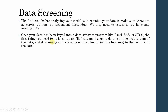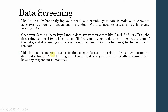The first thing you need to do is set up an ID column. I normally do this in the first column of the data — it is simply an increasing number from one up until the last row. This is done to make it easier to find a specific case, especially if you have sorted on different columns. After forming an ID column, it is a good idea to initially examine if you have any respondent misconduct.